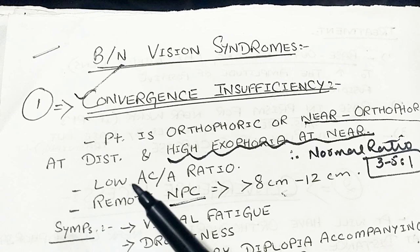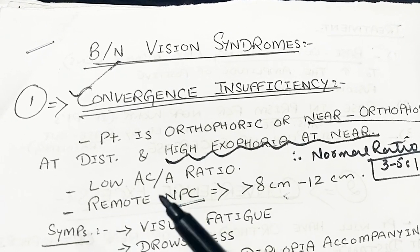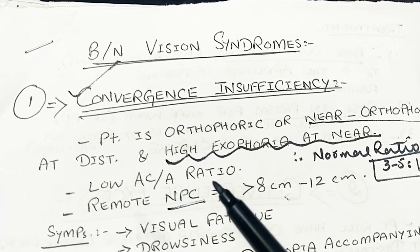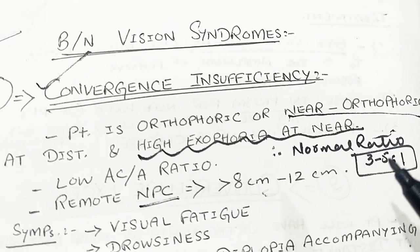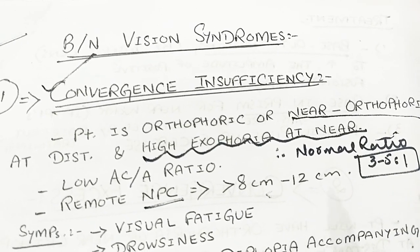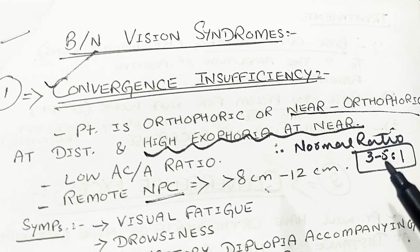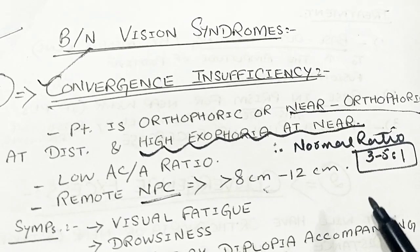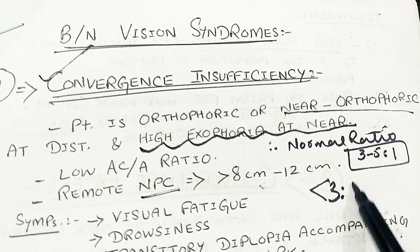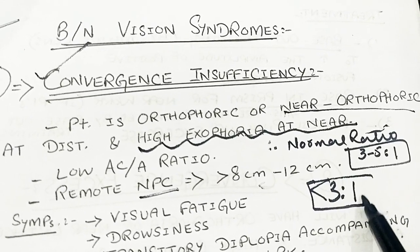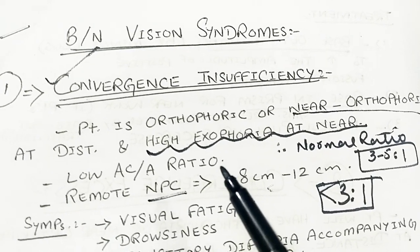The patient also has a low AC/A ratio. The accommodative convergence to accommodation ratio is low. The normal ratio is 3 to 5 is to 1. In convergence insufficiency, the patient has less than 3 to 1 ratio, meaning a low AC/A ratio.